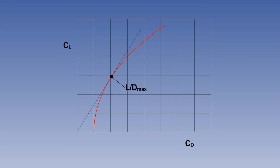LD max can be found from the drag polar by drawing a tangent to the curve from the origin, the slope of the tangent determining the value of the maximum lift-drag ratio. This is a common method of displaying the lift-drag ratio, and you will become quite familiar with it.